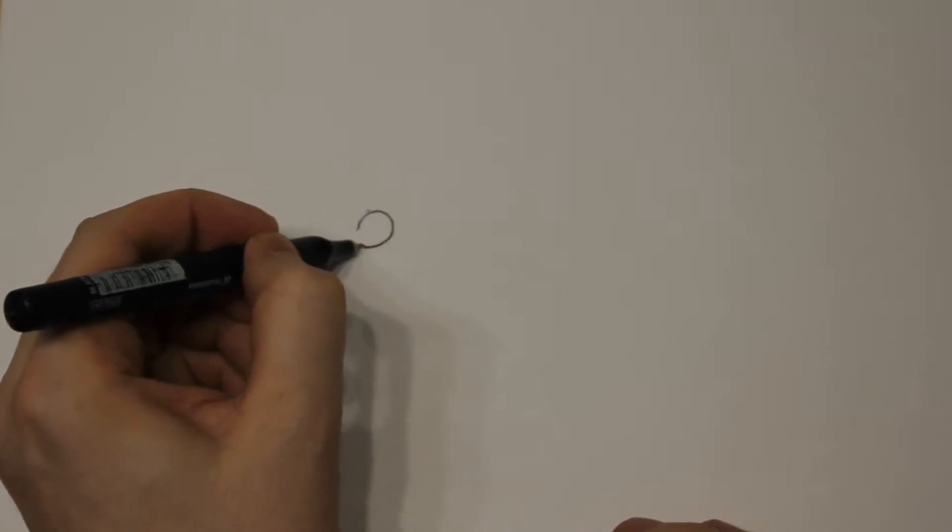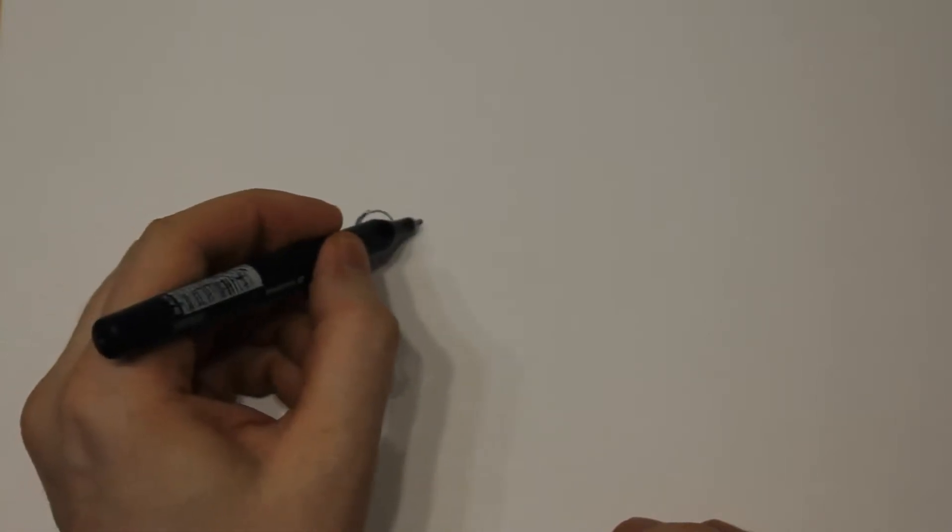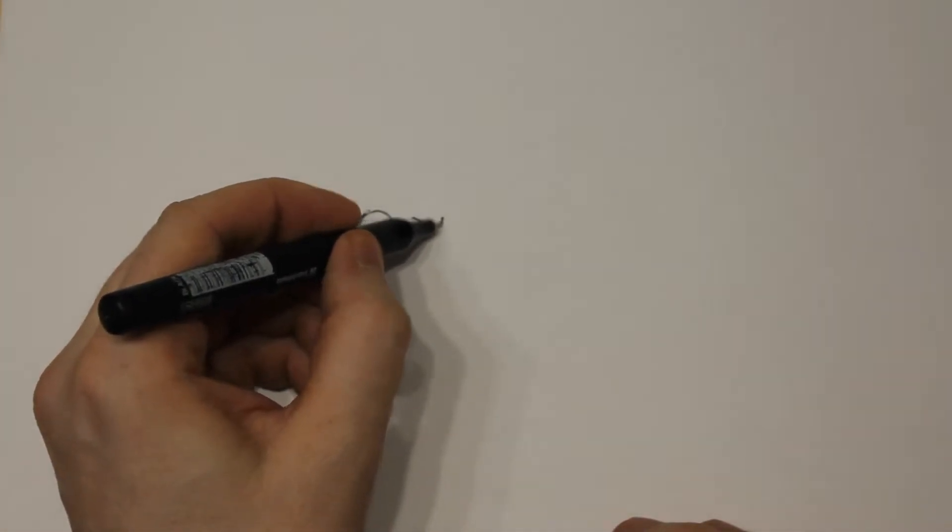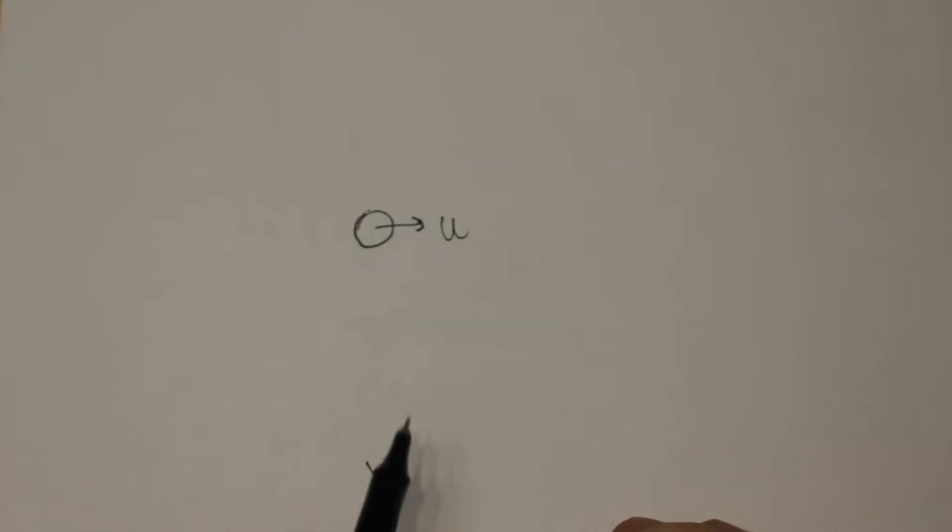But if we look at the planet this time from an outside observer's point of view, the planet will of course be moving with a velocity itself, and let's call this velocity u. So if we're sitting down here and we're observing this planet, we will see this planet move along at the velocity u.